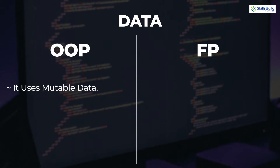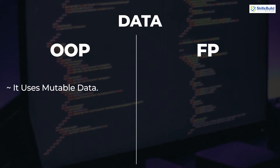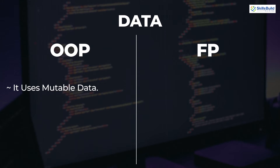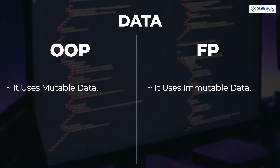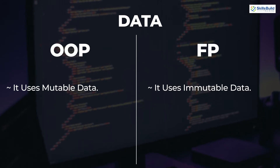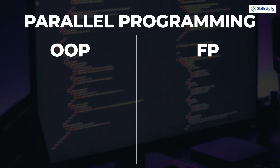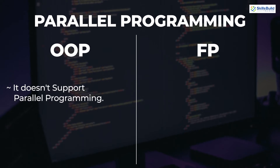The next concept is data. Object oriented programming uses mutable data — data which can be changed. Since we use objects in OOP, we can change our data with the help of those objects. In functional programming, immutable data is used because it is only concerned with inputs and outputs. As with the addition example, we simply give inputs and get the output of the addition — that is how it uses immutable data.